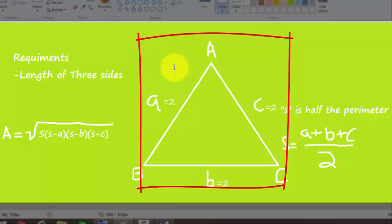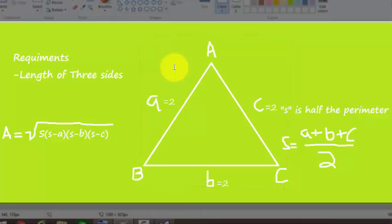Look at this figure in which we have a triangle with sides A, B, and C. In order to calculate the area we need the length of three sides which is written as a, b, and c in small letters. So the only requirement to calculate the area is these three lengths.